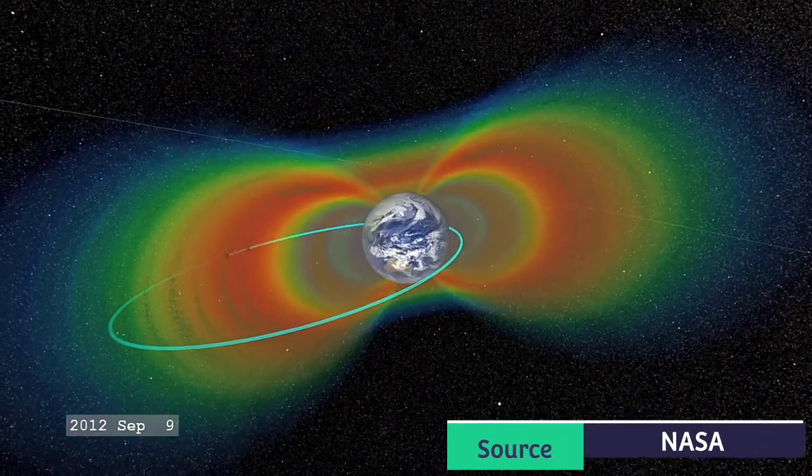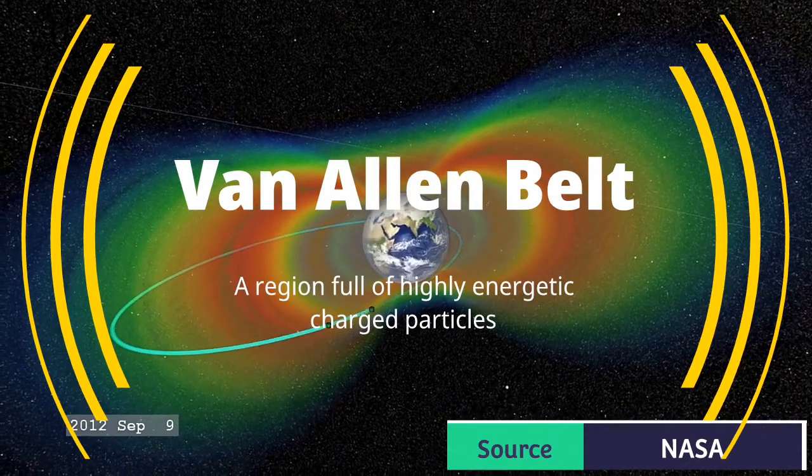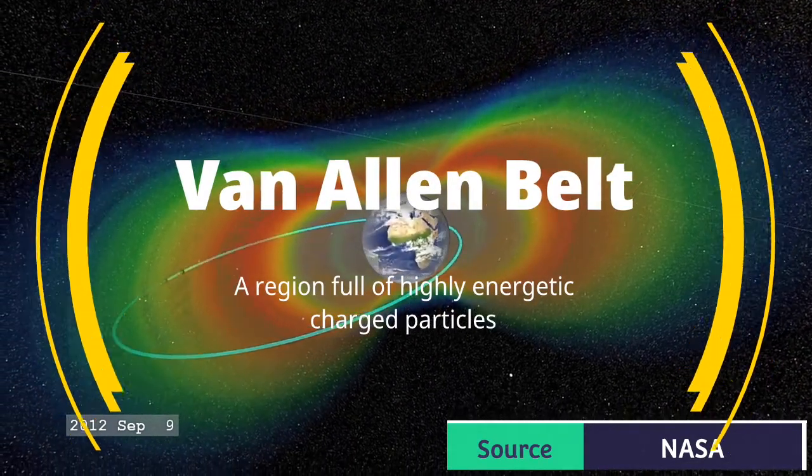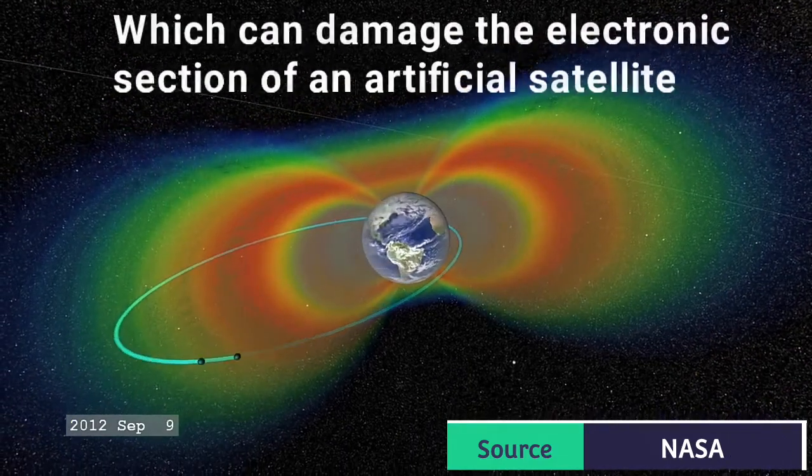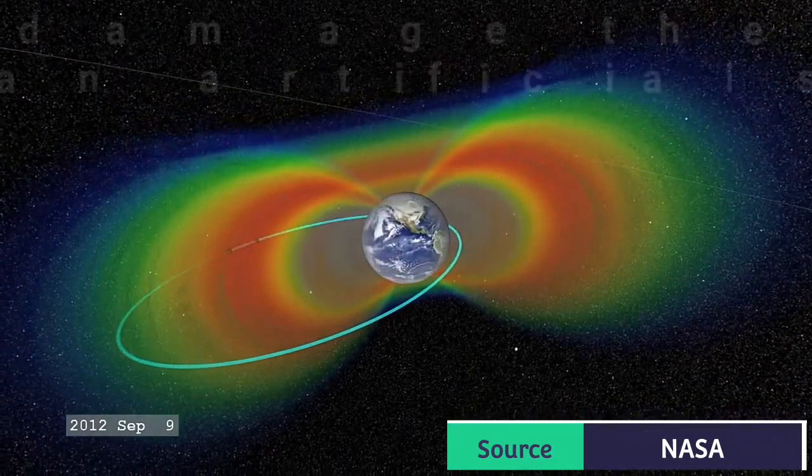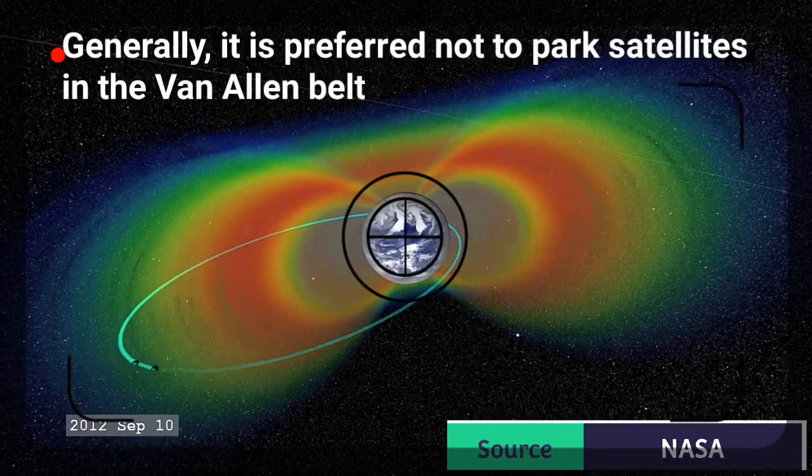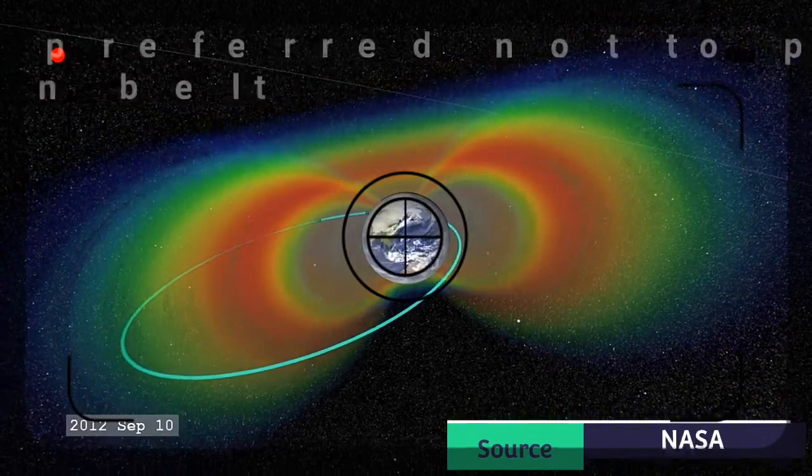There is a region in space called Van Allen Belt. This region is full of highly energetic charged particles, which can damage the electronic section of a satellite. Generally, it is preferred not to park satellites in the Van Allen Belt.